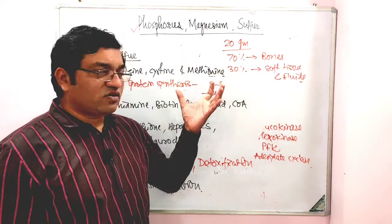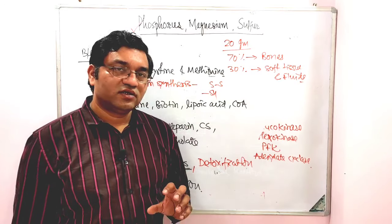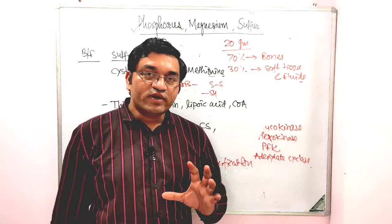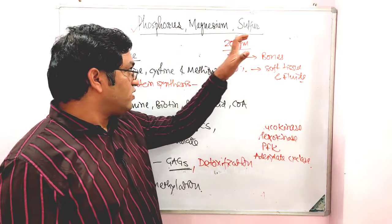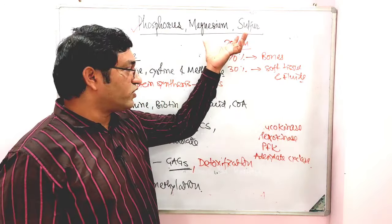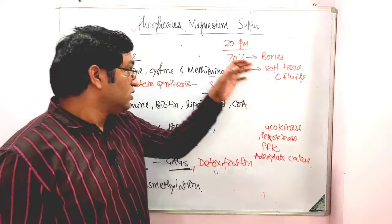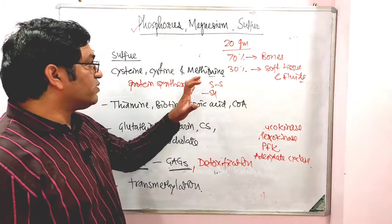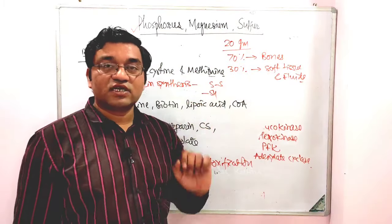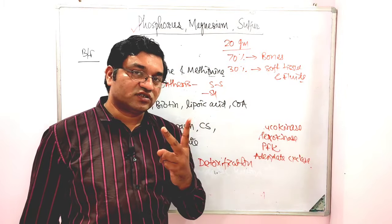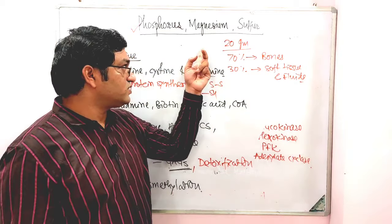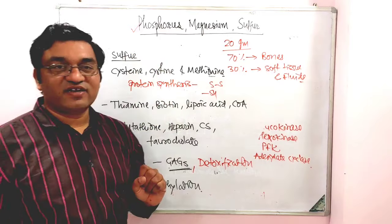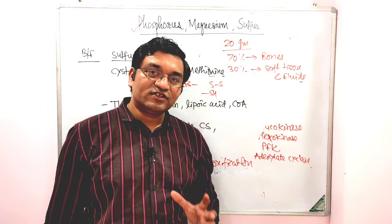The deficiency manifestation of Sulphur is not important — it is not common, so we will not discuss it. You may get a brief answer question on Magnesium and Sulphur biochemical functions — these are important BAQ questions. Phosphorus is important for short answer questions (SAQ). So this is all about Phosphorus, Magnesium and Sulphur. Keep watching, thank you.